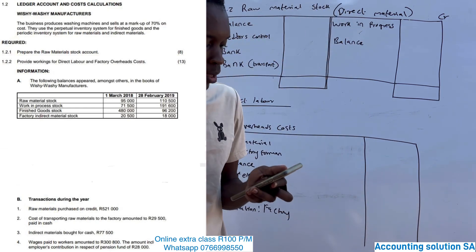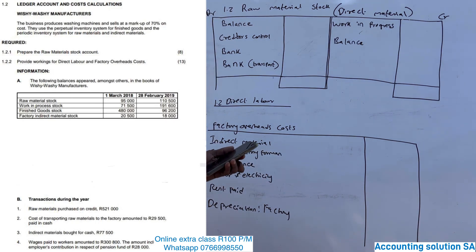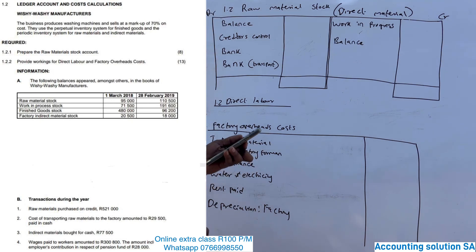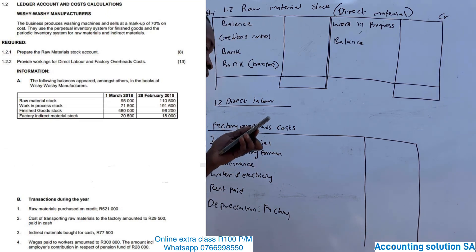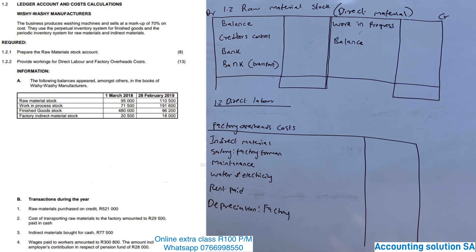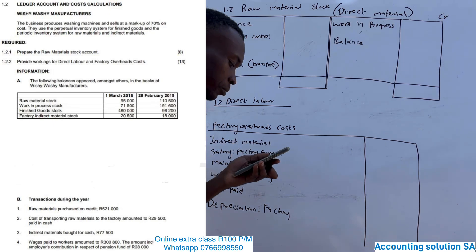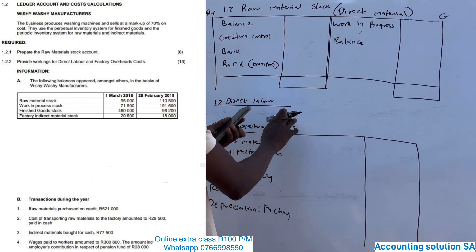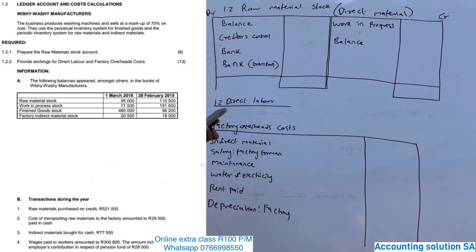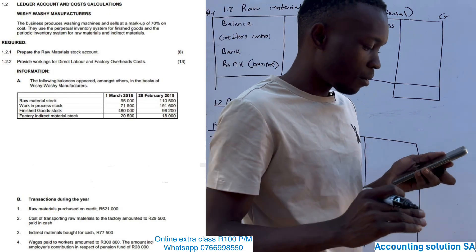Let's look at the question paper. It's an account and cost calculation. They said Wishy-Wishy Manufacture — the business produces washing machines and sells at a markup of 70% on cost. They use a perpetual inventory system for finished goods and the periodic inventory system for raw material and indirect material. Required: prepare the raw material stock account; provide the workings of direct labor; and factory overhead cost — 13 marks.